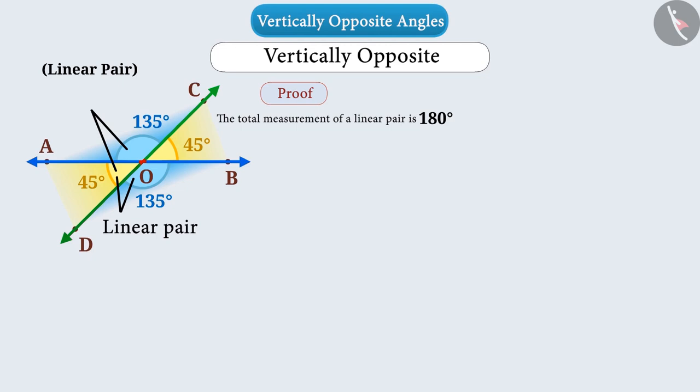we can write for the line AB, angle AOD plus angle DOB is equal to 180 degrees. And for the line CD we can write angle AOD plus angle COA is equal to 180 degrees.